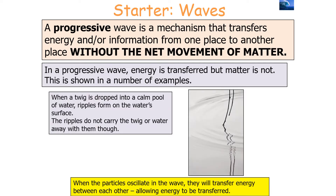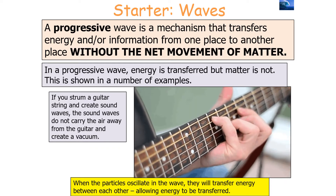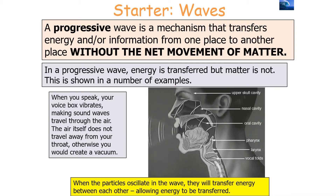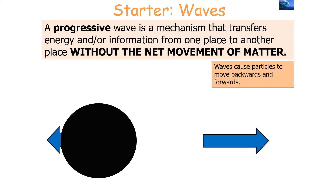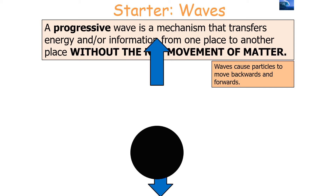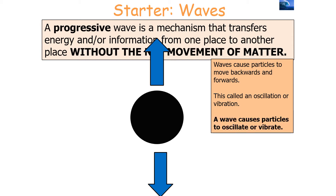Examples illustrate this well. When a twig is dropped into a calm pool of water, ripples form on the surface but don't carry the twig or water away. When you strum a guitar string, the sound waves do not carry air away to create a vacuum. Similarly, when you speak, your voice box vibrates making sound waves travel through the air, but the air itself does not travel away from your throat. Instead, the particles oscillate backwards and forwards — waves cause particles to oscillate or vibrate.